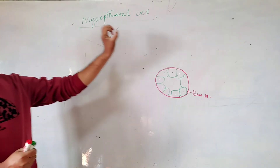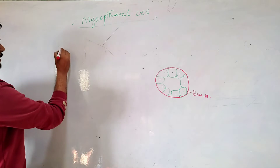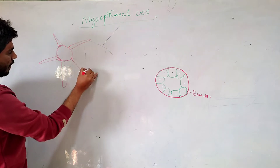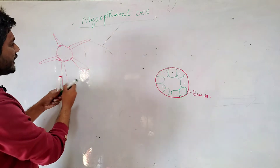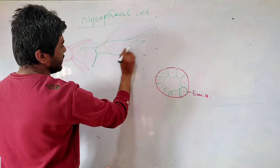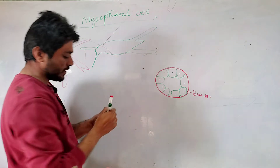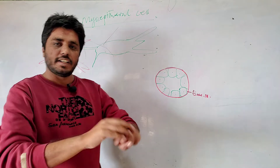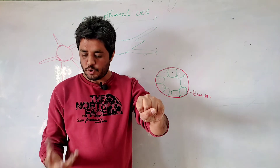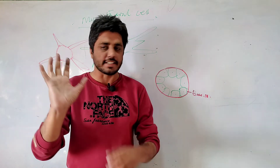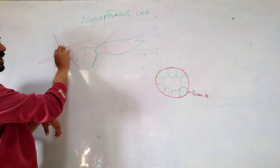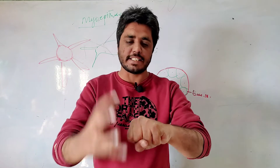These myoepithelial cells are actually in a shape — they are a satellite type of cell. They have many cellular projections, which may be structured like this or like this. This head is like a cell body, and these are the cellular projections of the cell.